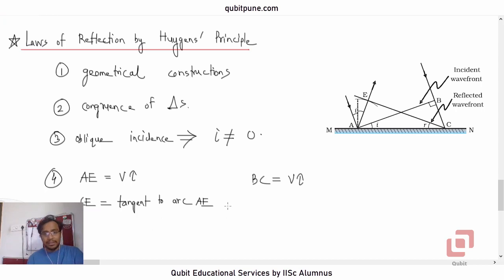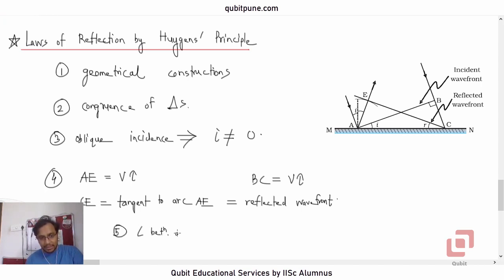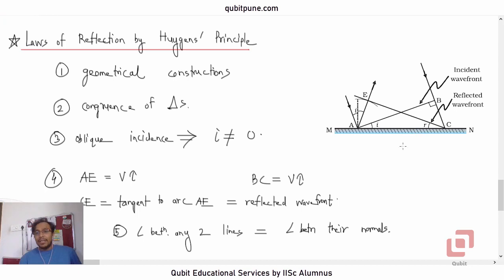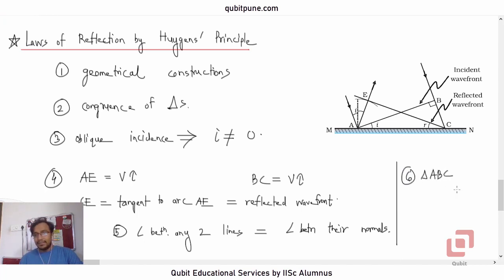CE is now our reflected wavefront. Using the geometric fact that the angle between any two lines or planes equals the angle between their normals, the angle of incidence becomes equal to the angle of reflection. We then prove congruence of triangles ABC and AEC, and that proves the law of reflection.